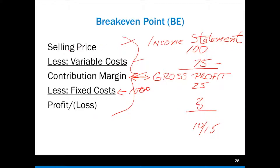From a break-even perspective: I have a selling price of $100, less my variable costs of $75, which gives me a contribution margin of $25. Less my fixed costs — let's make them $15 — that means the profit on that plate of food would be $10. Understand that right now — that's not calculating break-even. That's just the different components you're going to need in order to do the break-even analysis.